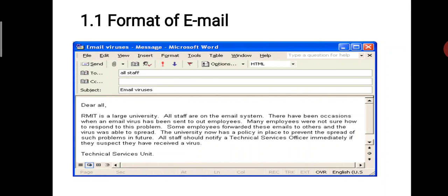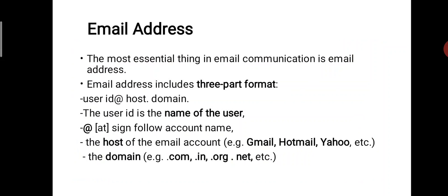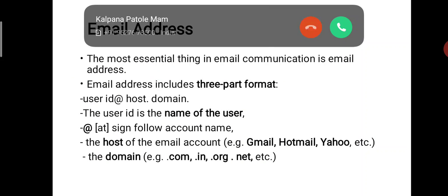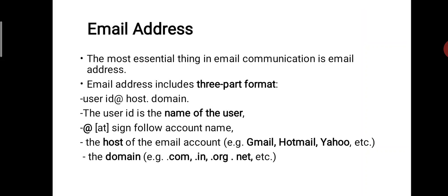In the next part we will learn about what the language of email should be. The most essential thing in email communication is the email address. An email address includes three parts: user ID, at sign (@), host, dot, domain. The user ID is the name of the user, followed by the @ sign, then the host of the email account such as Gmail, Hotmail, Yahoo, etc., and the domain such as .com, .in, .co.in, .net, etc.